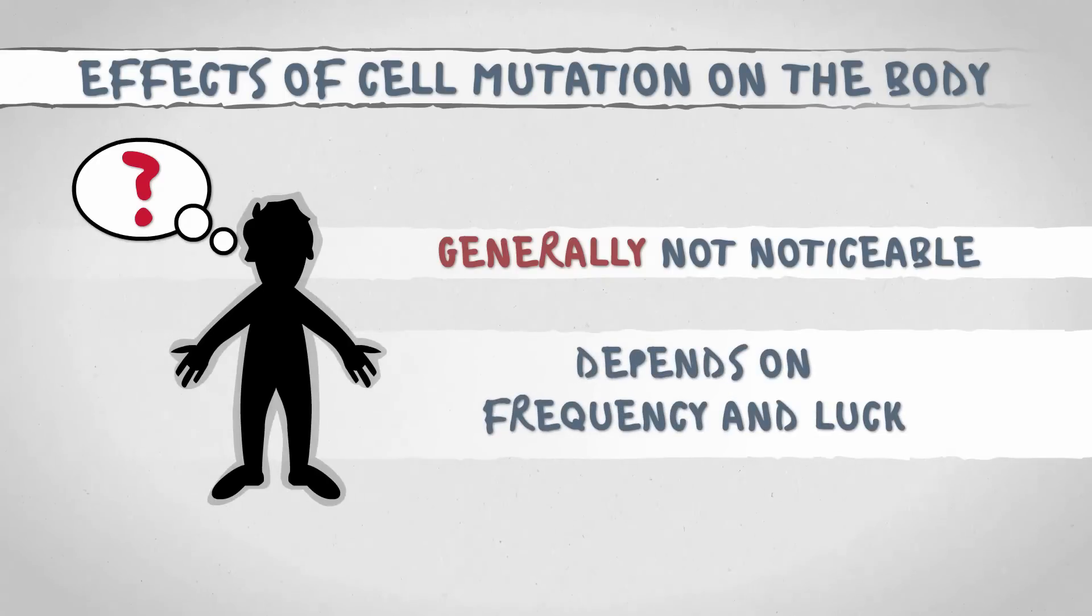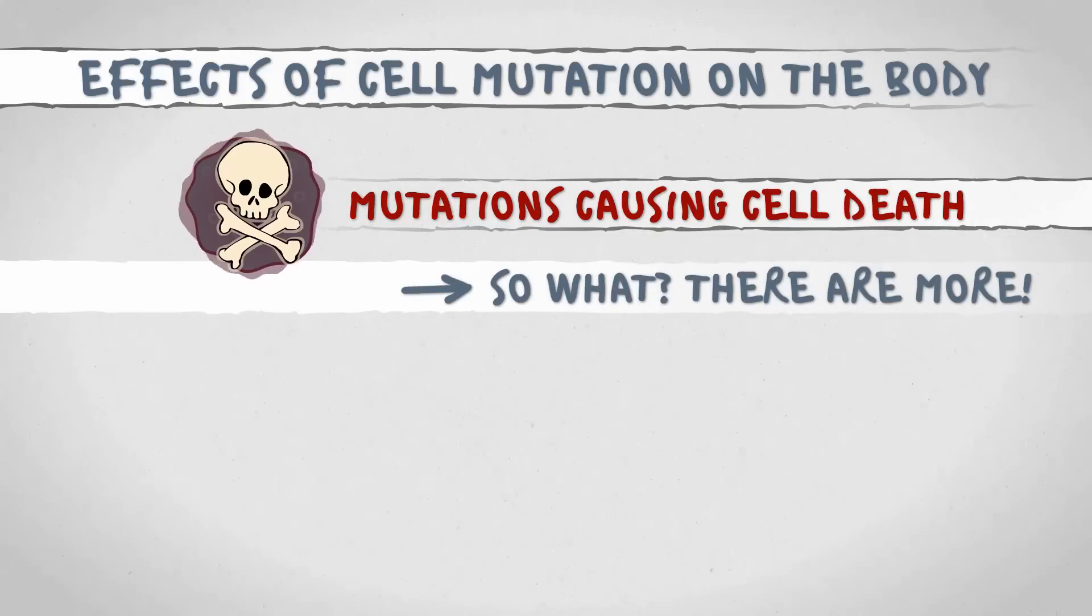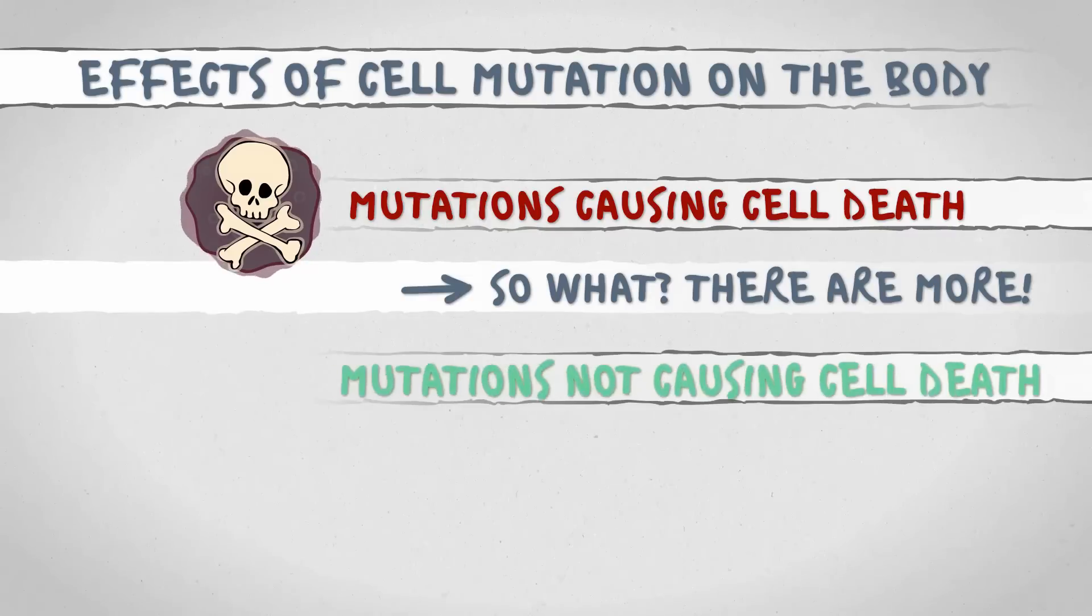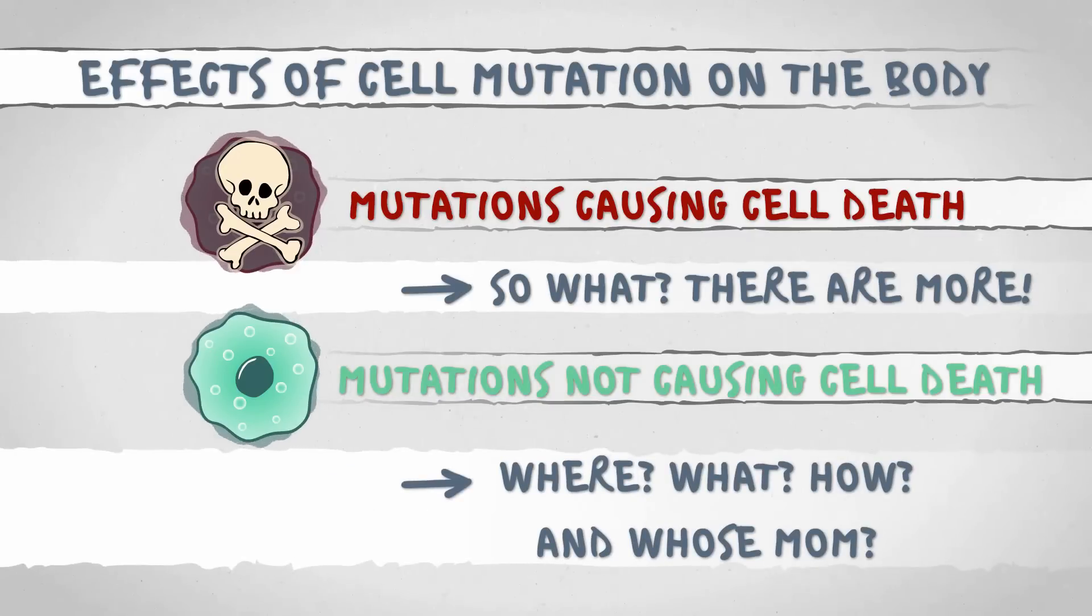The body will generally not notice the mutation of individual cells. The extent of it does matter of course, but let's assume the amount of DNA damage in your body is average. Should a cell here and there die because of a deadly mutation, so what? There are plenty more. It would have kicked the bucket anyway, sooner or later, considering our cells are being replaced all the time.